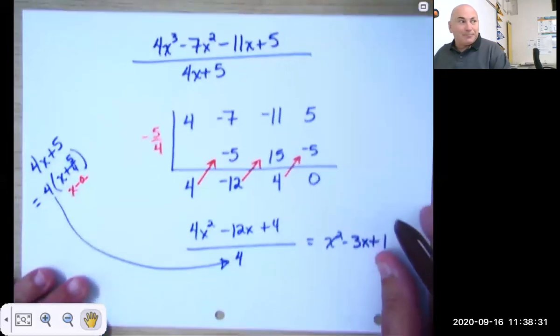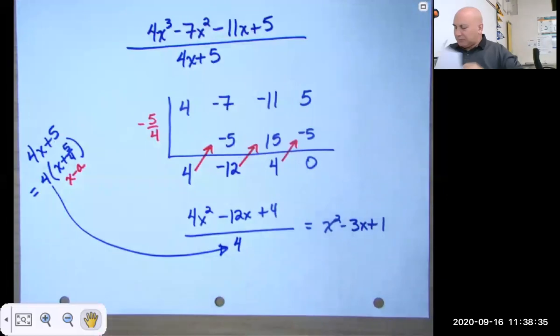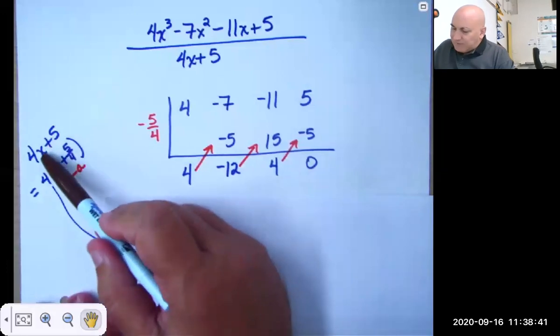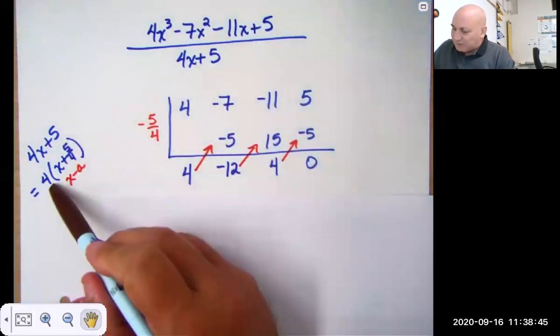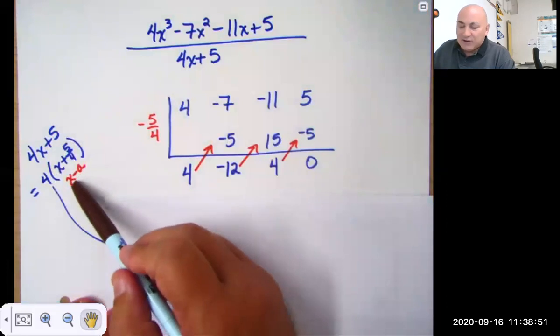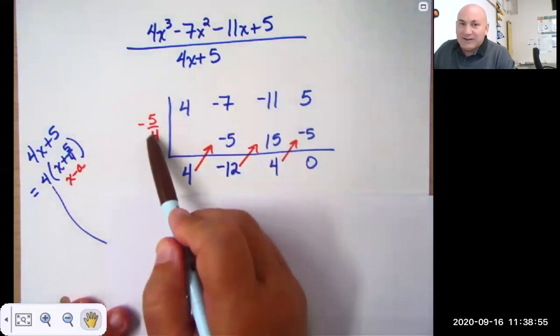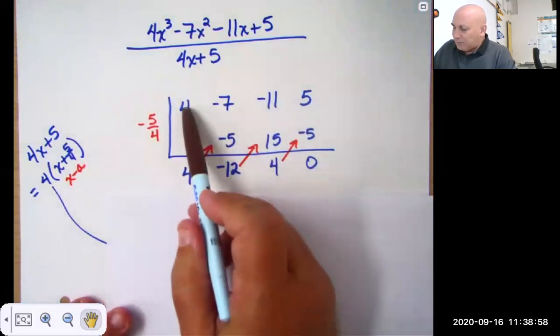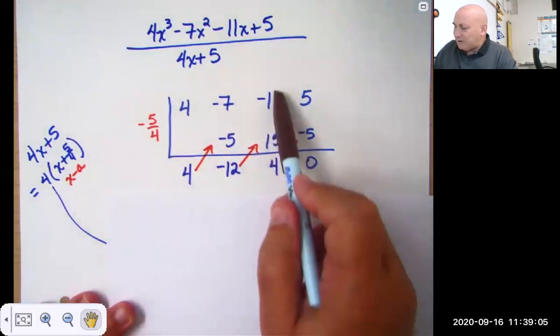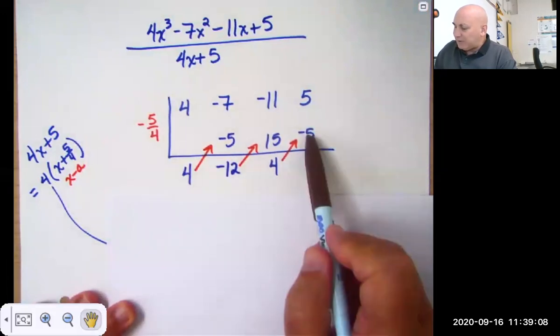And now I'll show you what happens if you try to divide by not x minus a, but something x minus a. So first off, we're going to factor a 4 out because we're dividing by 4x plus 5. So I factor a 4 out. That's 4 times x plus 5 fourths. Since it's got to be x minus a, a has to be negative 5 fourths. So I bring down the 4, multiply, bring it up here, add. Multiply, bring it up here, add. Multiply, bring it up here, add.